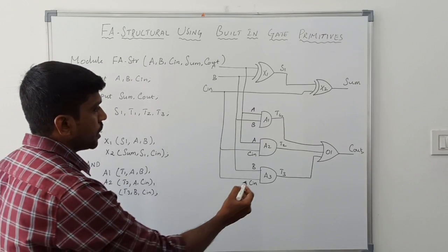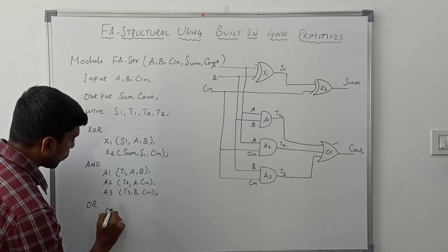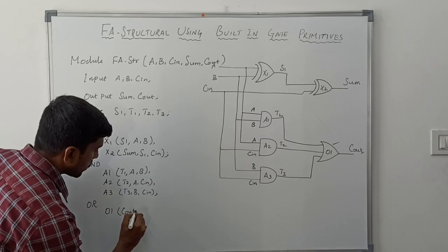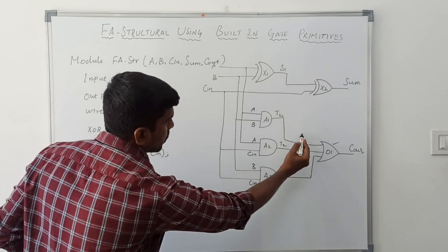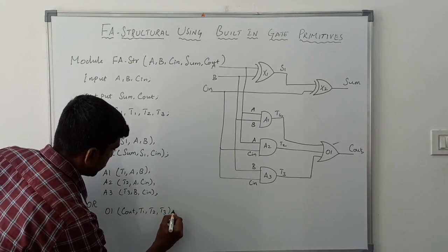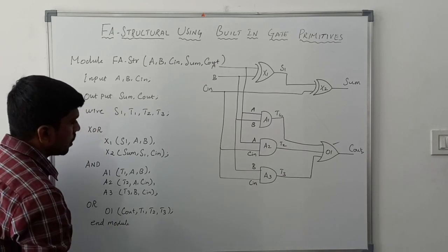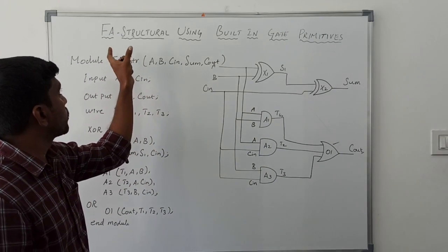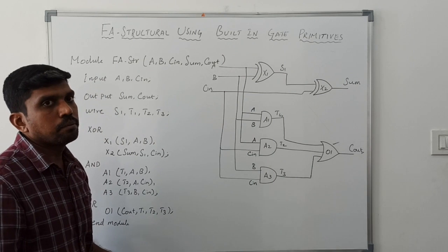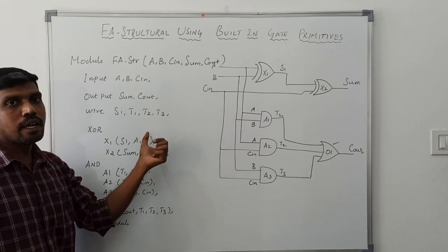Then take the OR operation. Represent the OR gate as o1. The output of o1 is c-out, and the inputs are t1, t2, and t3. This completes the code for the full adder structure using the built-in gate primitive method, where the module consists of gate instantiations: XOR gate, AND gate, and OR gate.